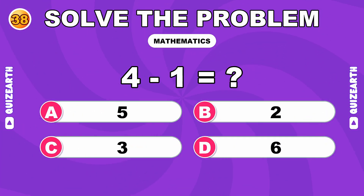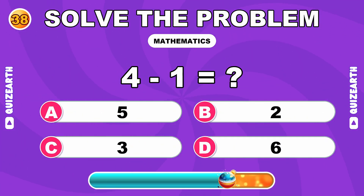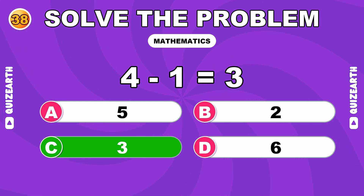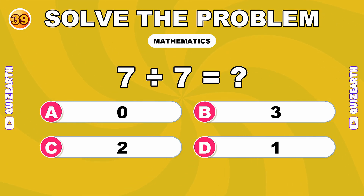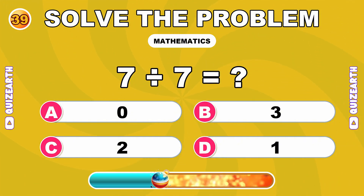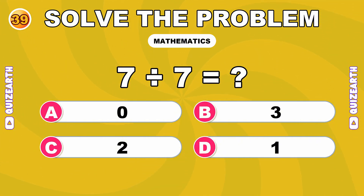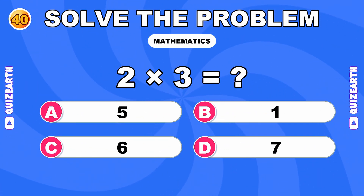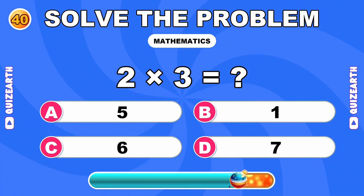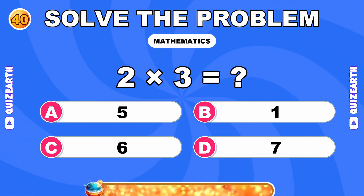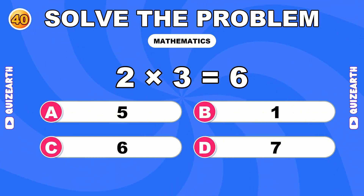How much is 4 minus 1? Breathtaking. The answer is 3. What do you get when you divide 7 by 7? Genius move. The answer is 1. What is 2 times 3? Too smooth. The answer is 6.